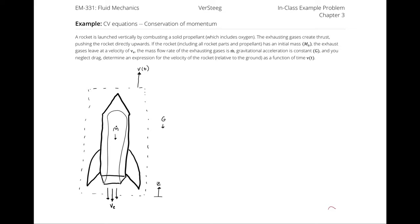A rocket is launched vertically by combusting a solid propellant, which includes oxygen. The exhausting gases create thrust, pushing the rocket directly upwards. If the rocket, including all rocket parts and propellant, has an initial mass of m-naught, the exhaust gases leave at a velocity of v subscript e, the mass flow rate of the exhausting gases is m-dot, gravitational acceleration is a constant written as g, and you neglect drag, determine an expression for the velocity of the rocket, relative to the ground, as a function of time.